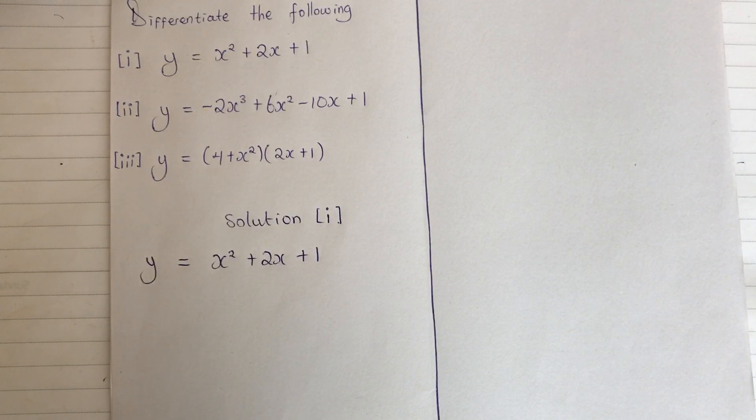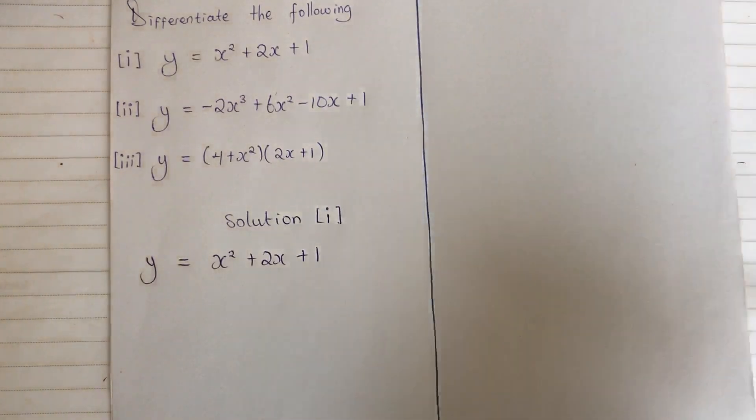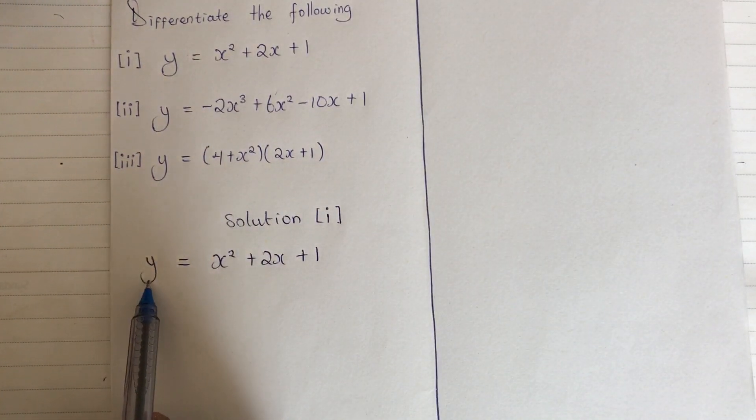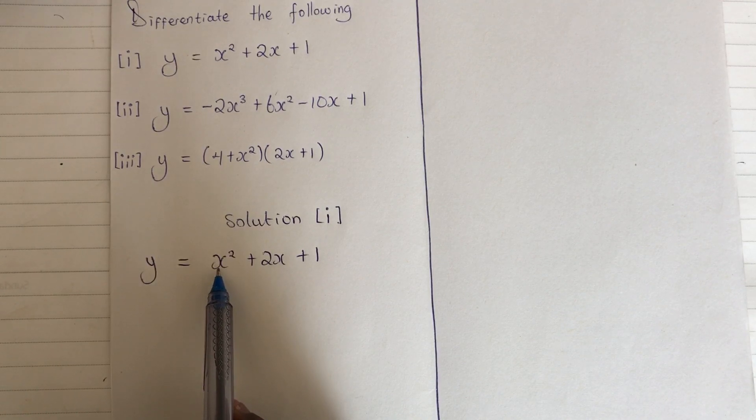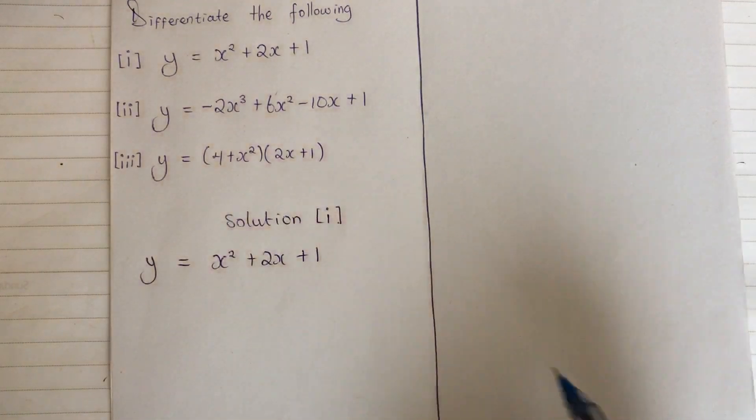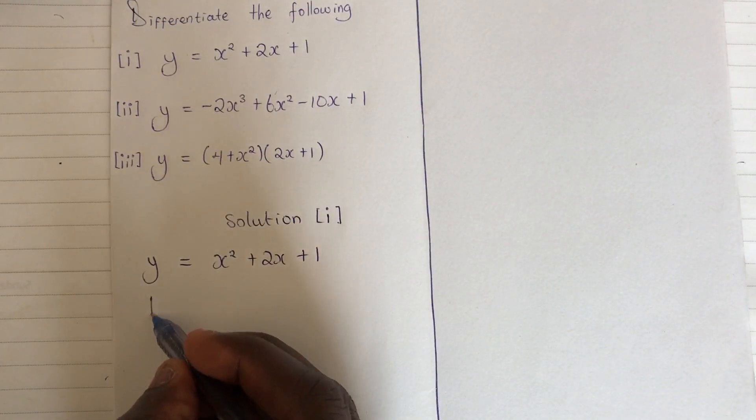So now I'm differentiating y with respect to this variable which is x. I'm differentiating y with respect to x, so what we call it dy/dx. So I have my dy/dx equals, now when I differentiate, this two times this, we are having what?